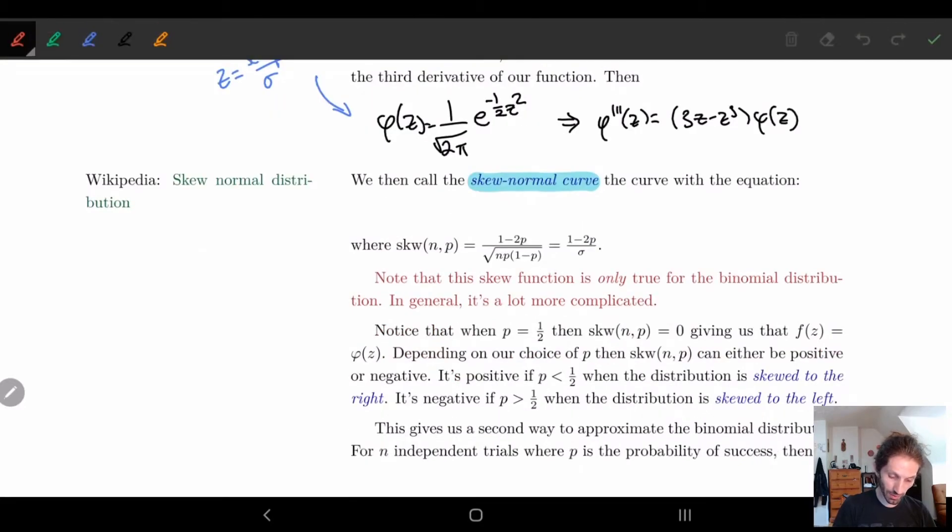And basically what we have for this one is we let f(z) be equal to φ(z). So we take our normal distribution function, our normal curve.